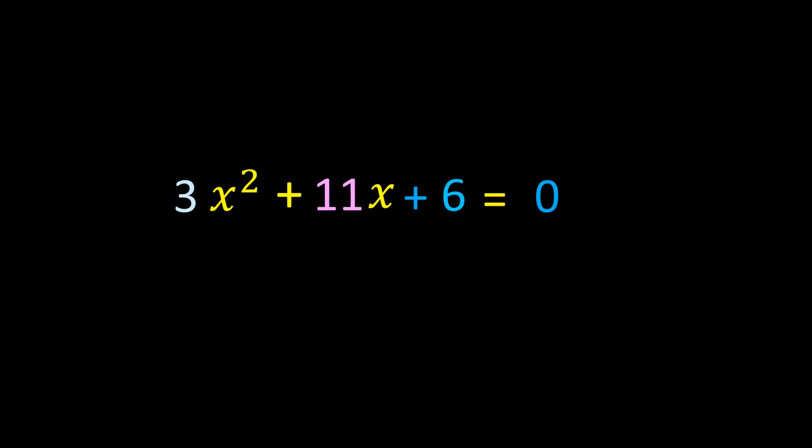In this video, we are going to learn finding the roots of a quadratic equation by the completing the square method. For this, we are considering 3x² + 11x + 6 = 0 as our quadratic equation. Here, the coefficient of x² is 3, the coefficient of x is 11, and 6 is the constant.